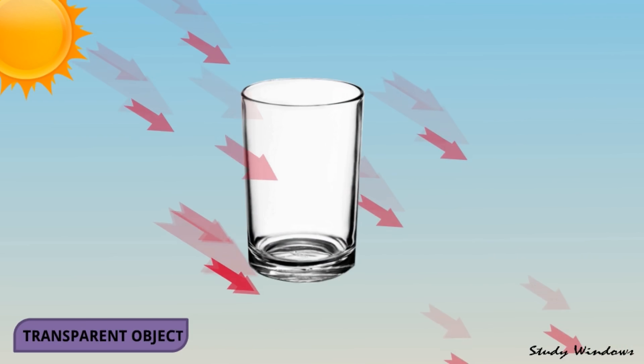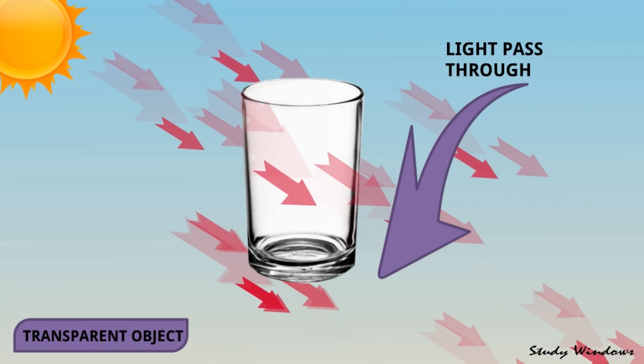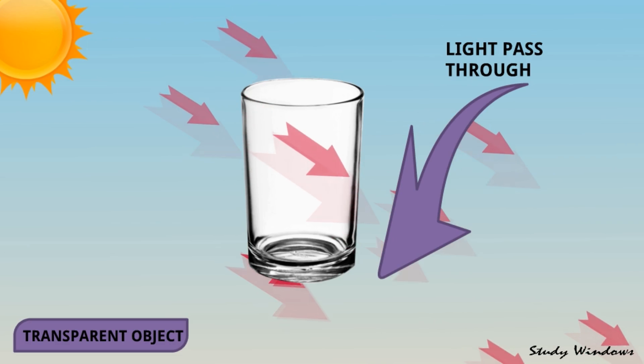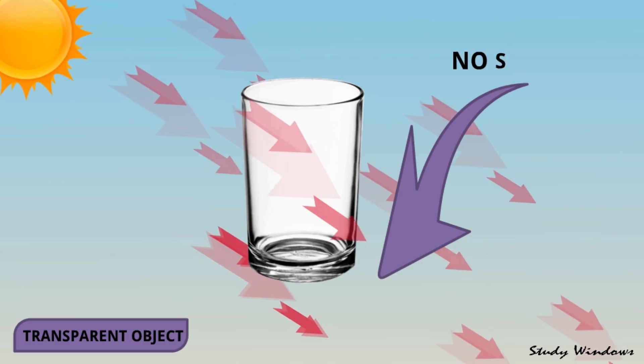And what about the glass? That is a transparent object. Light passes through completely, so this glass cannot obstruct the light, so there will not be any shadow.